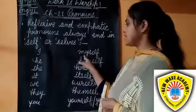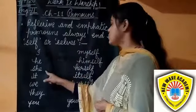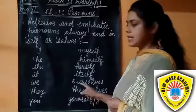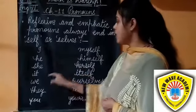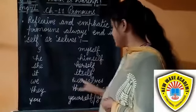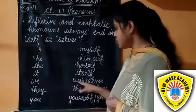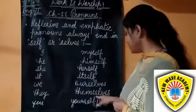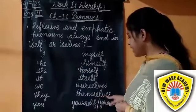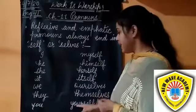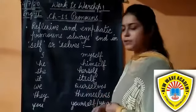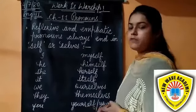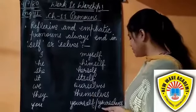Here are the reflexive and emphatic pronouns: I → myself, He → himself, She → herself, It → itself, We → ourselves. For singular nouns we use -self, and for plural nouns we use -selves. We is plural, so we write 'ourselves.' They is also plural, so we write 'themselves.' You can be singular or plural — singular: yourself; plural: yourselves.